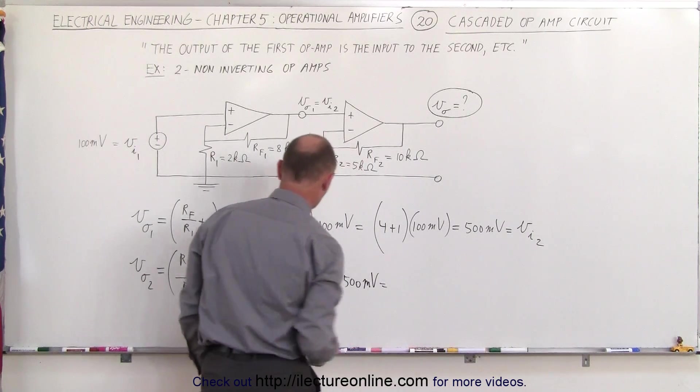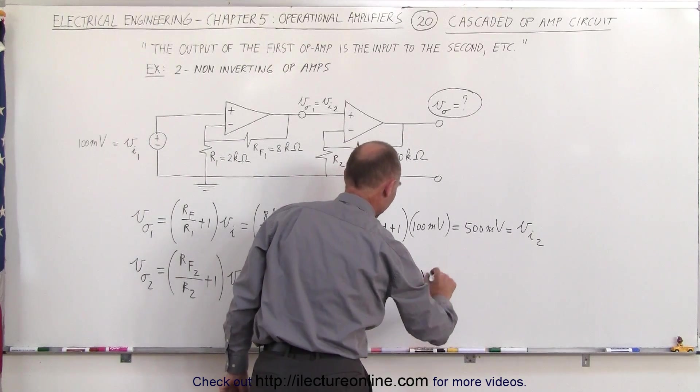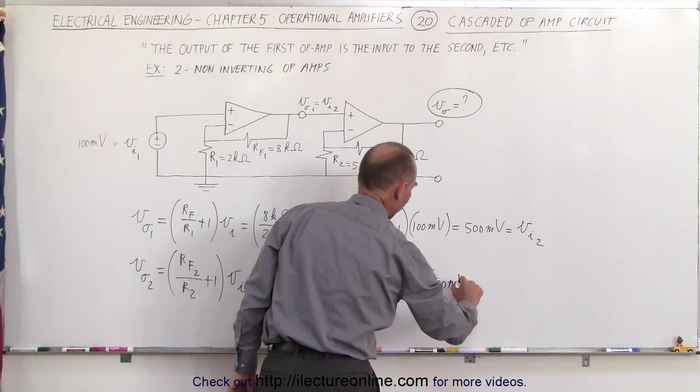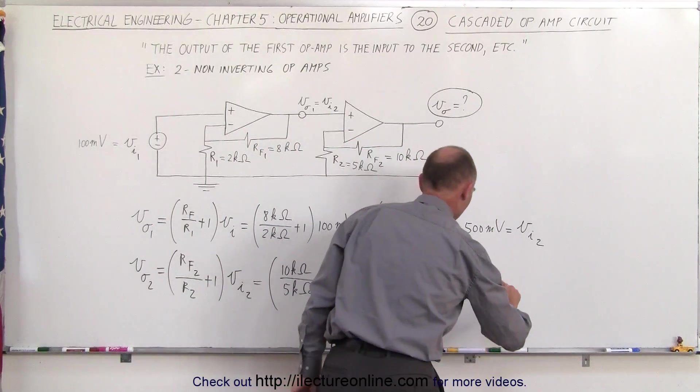This is equal to 10 divided by 5, which is 2. That becomes 2 plus 1 times 500 millivolts, which equals 3 times 500 millivolts, or 1.5 volts.